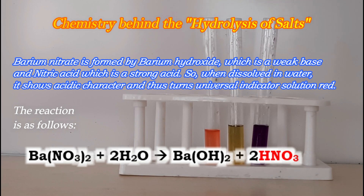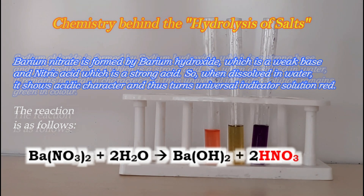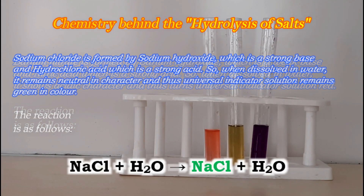Barium nitrate is formed by barium hydroxide, which is a weak base, and nitric acid, which is a strong acid. So when dissolved in water, it shows acidic character and thus turns universal indicator solution red. The reaction is: Ba(NO3)2 + H2O → Ba(OH)2 + 2HNO3.